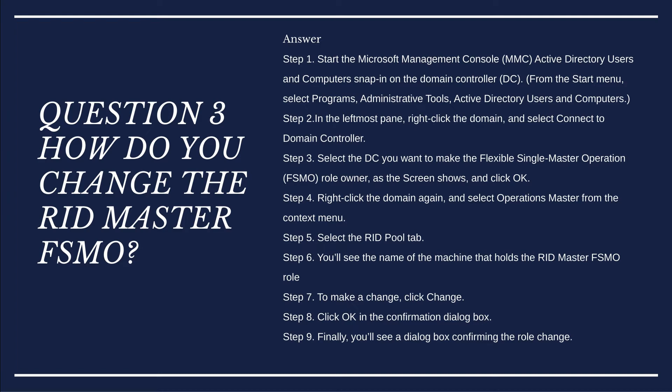Step 3 — Select the DC you want to make the FSMO role owner, as the screen shows, and click OK. Step 4 — Right-click the domain again and select Operations Master from the context menu. Step 5 — Select the RID Pool tab. Step 6 — You'll see the name of the machine that holds the RID Master FSMO role.